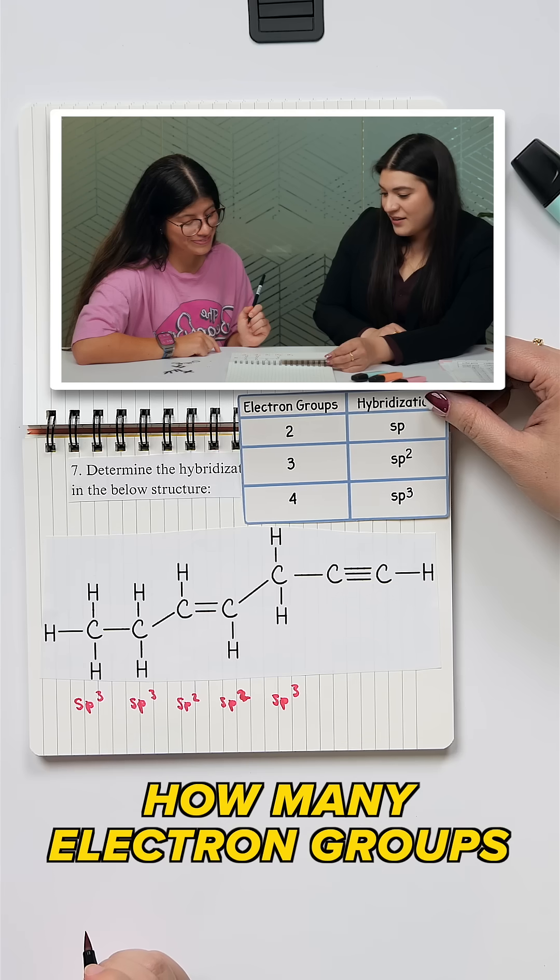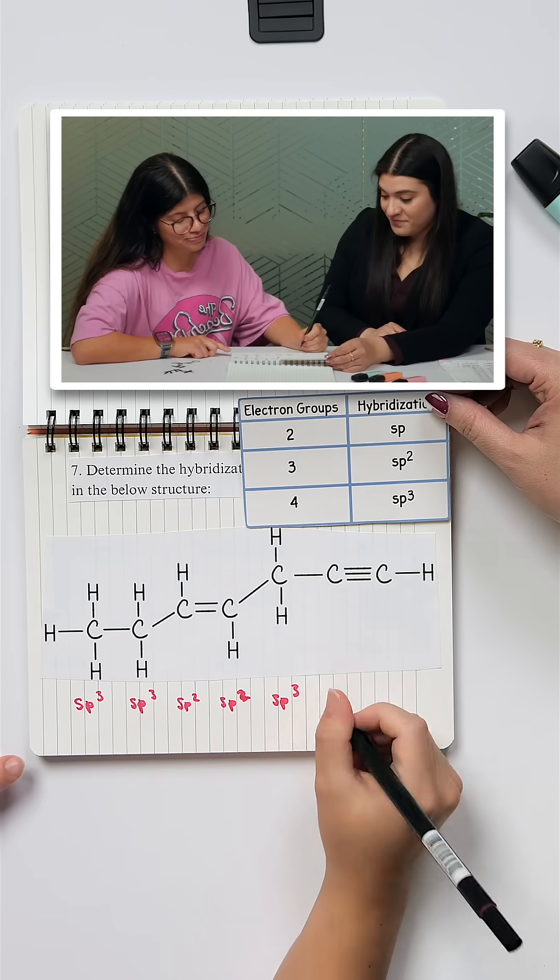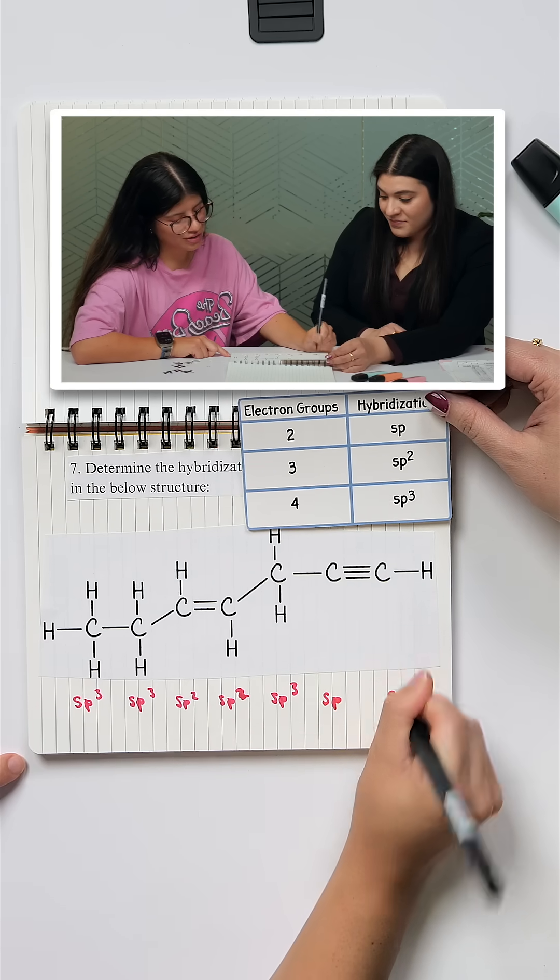What about that one? How many electron groups do we have? That one's two. Great, yeah. And then the last one's also two? Mm-hmm. That's it.